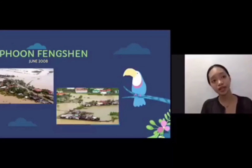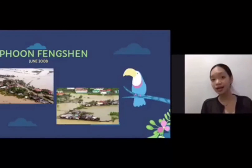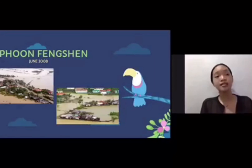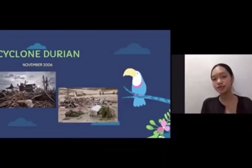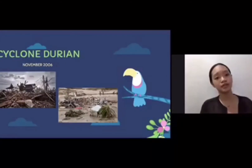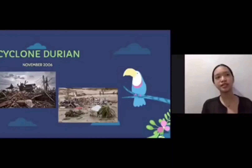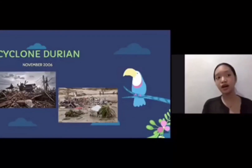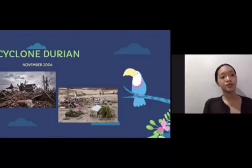Another typhoon happened in June 2008, with the most affected areas in Iloilo, Capiz, Aklan, and Antique in Panay Island as well as Leyte and Samar. The last one is Cyclone Dorian, which happened on November 26 and reached its peak strength with 10-minute sustained winds of 195 kilometers per hour. It landed on the Northern Philippine Islands of Luzon — suffering another direct hit from Super Typhoon Dorian, known locally as Reming.